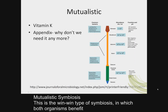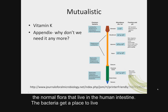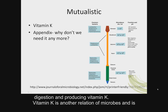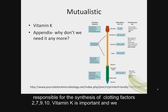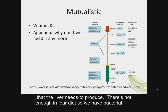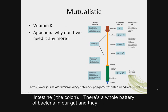Mutualistic symbiosis is the win-win type where both organisms benefit from cooperating. An example is the normal flora that live in the human intestine. The bacteria get a place to live with a built-in food source, and in return they benefit the host by aiding digestion and producing vitamin K. Vitamin K is responsible for the synthesis of clotting factors 2, 7, 9, and 10. We get some vitamin K in our diet, but not enough to sustain the level of blood-clotting plasma proteins that the liver needs to produce. Bacterial flora in the gut — spread between the small intestine and the large intestine — are cranking out vitamin K.